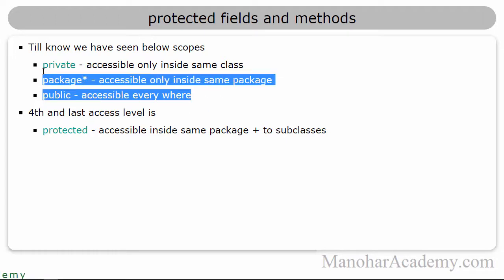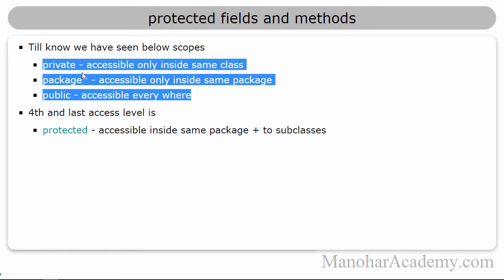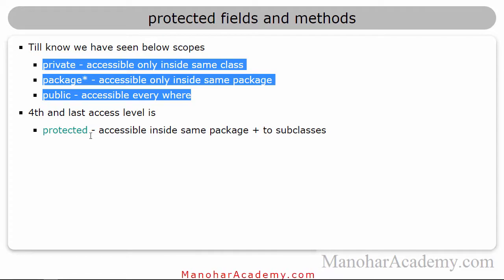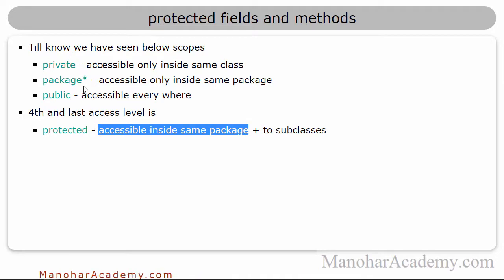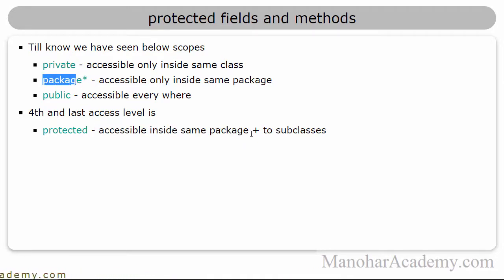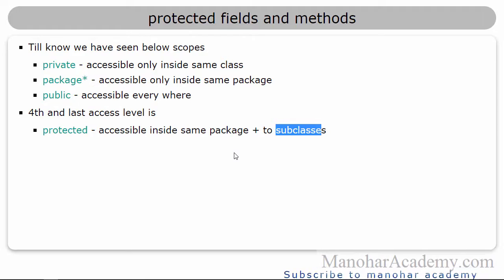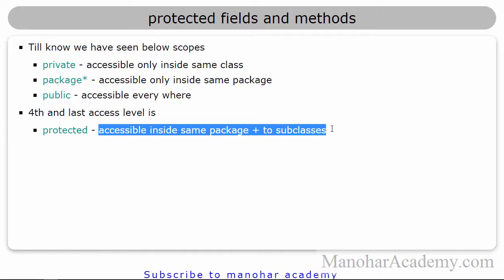We know about these three. Now in this lesson, we are going to learn about the fourth access level, that is protected. The protected variables, fields, and methods can be accessed inside the same package — similar to package scope — and they can also be accessed from subclasses. These subclasses can be in other packages as well. So protected is something like package plus subclasses.